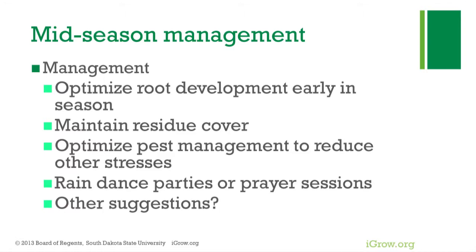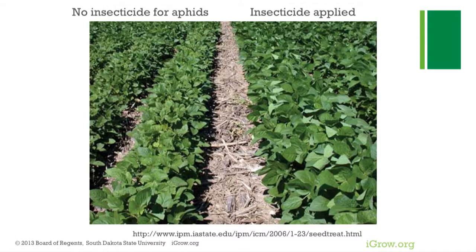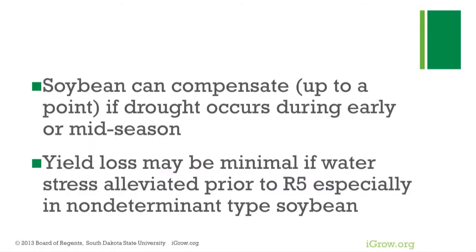Here's a comparison: no insecticide for aphids versus insecticide applied. With insecticide you can see better canopy cover and nice residue on the ground, which stops evaporation. Good canopy cover also suppresses weeds — unless it's waterhemp or Palmer amaranth, which can push through. Soybeans can compensate, and yield loss may be minimal if we alleviate drought before R5, especially in non-determinate soybean types.